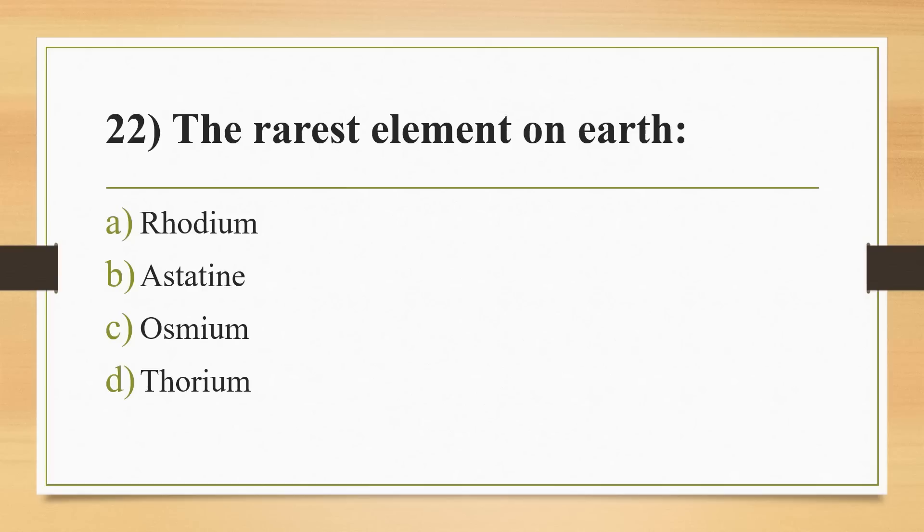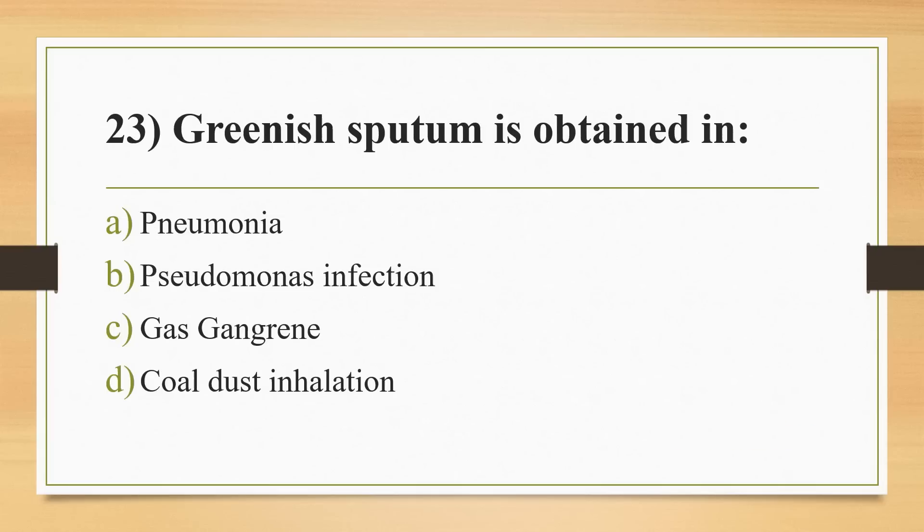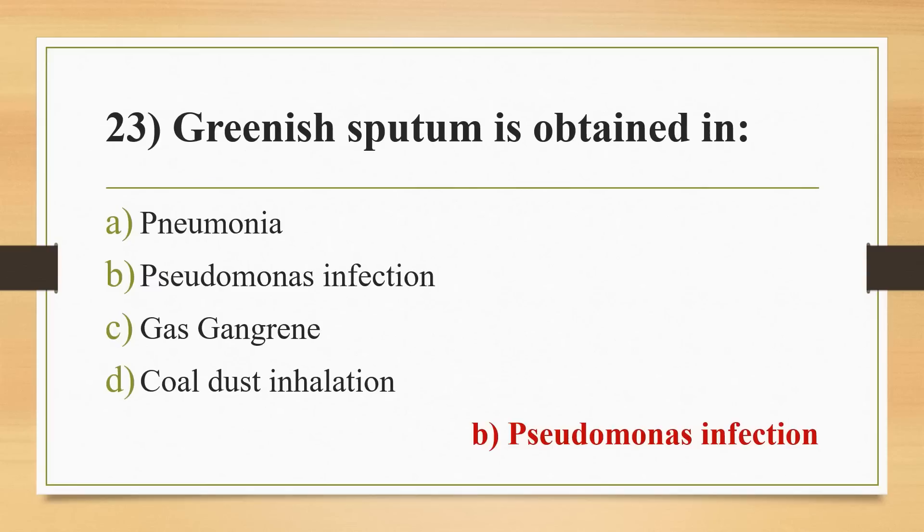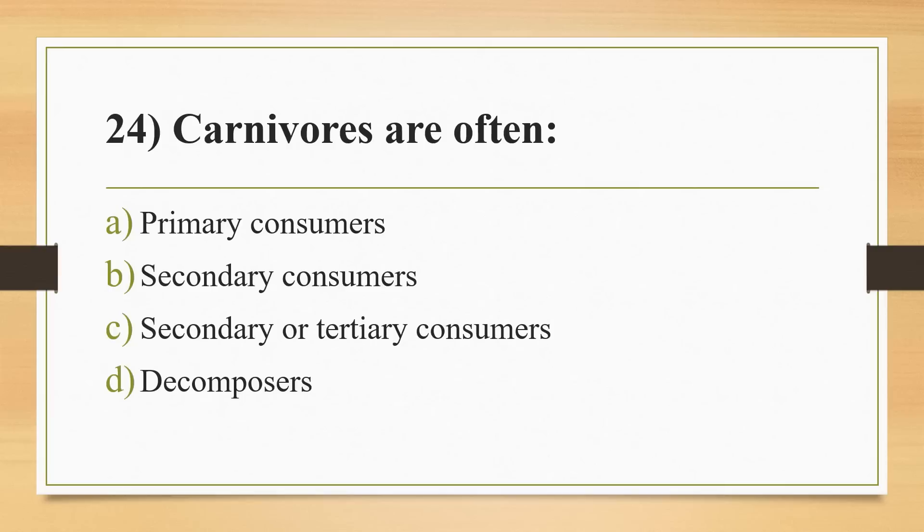Twenty-second question: the rarest element on earth. Options: rhodium, astatine, osmium, or thorium. Answer is Option B, astatine. Twenty-third question: greenish sputum is obtained in? Options: pneumonia, Pseudomonas infection, gas gangrene, or coal dust inhalation. Answer is Option B, Pseudomonas infection.